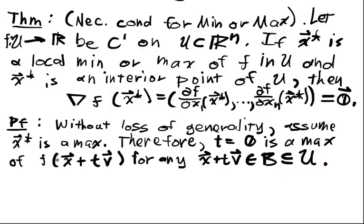So this is a max, and now this is a one-dimensional function of t. Then, we have that zero has to be equal to—